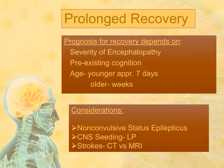If recovery does not occur, considerations would include non-convulsive status epilepticus, in which there are seizures electronically in the brain that aren't manifest peripherally, or CNS seeding from the original sepsis such that a spinal tap may be indicated. Various ischemic or hemorrhagic strokes can also take place — patients may go into atrial fibrillation and have emboli causing ischemic strokes, or they may have developed a coagulopathy and have hemorrhagic ones. A CT scan would be adequate to look for hemorrhagic strokes, but an MRI scan would be the procedure of choice for ischemic.